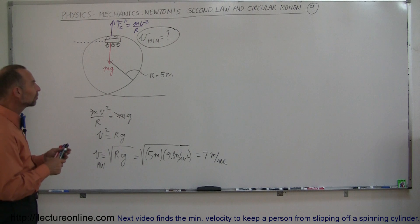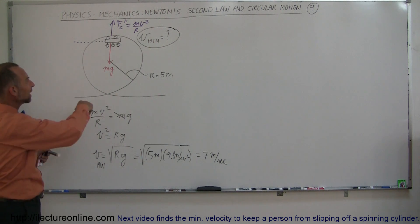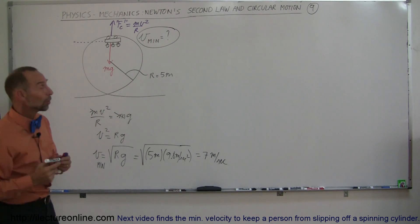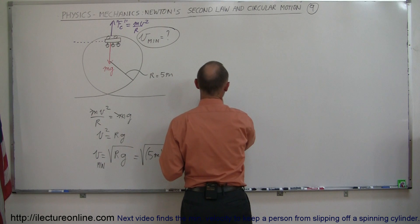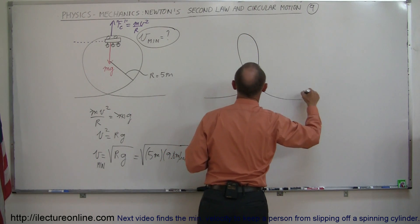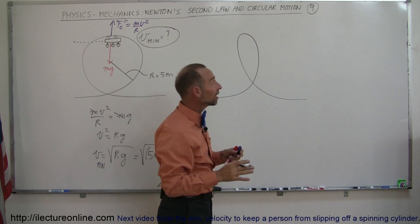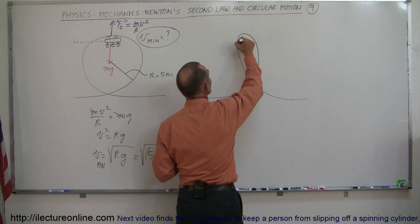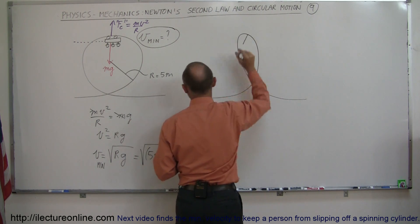So what they tend to do these days at amusement parks is instead of making these circular, they make them more like a teardrop shape. So they come in like this and then it goes like this and like that. I know that's exaggerated, but that's the concept. So what it means is at the very top, the radius of curvature becomes much smaller.